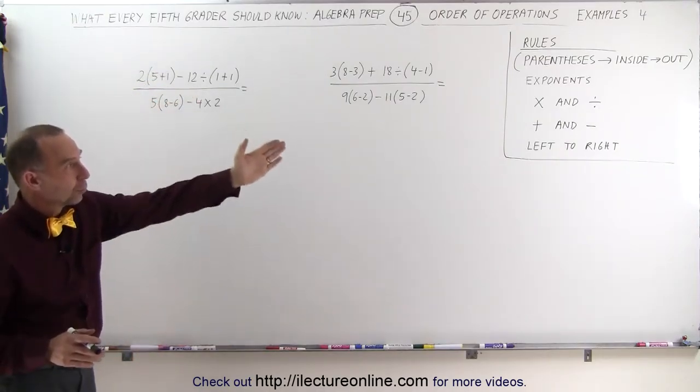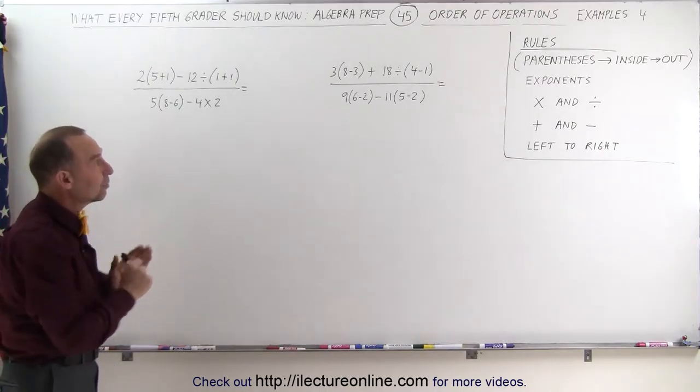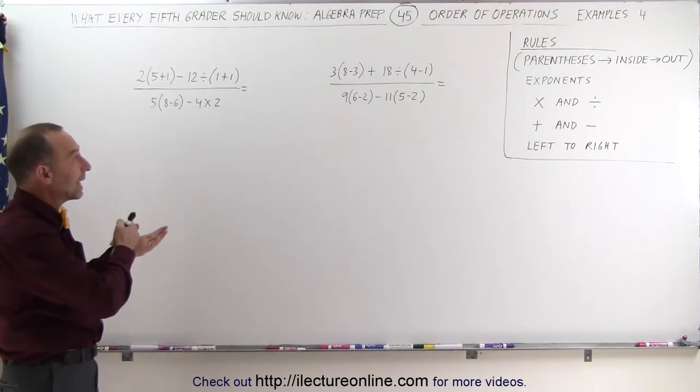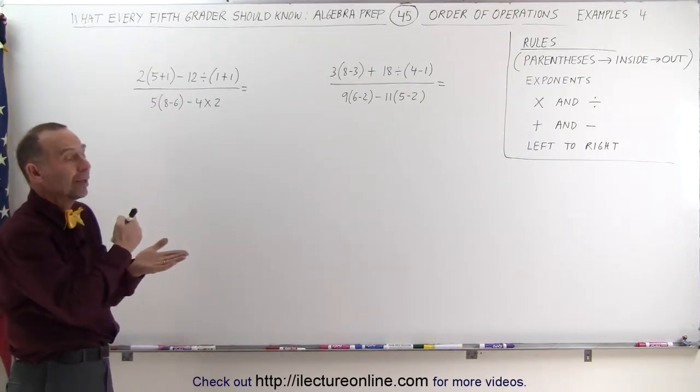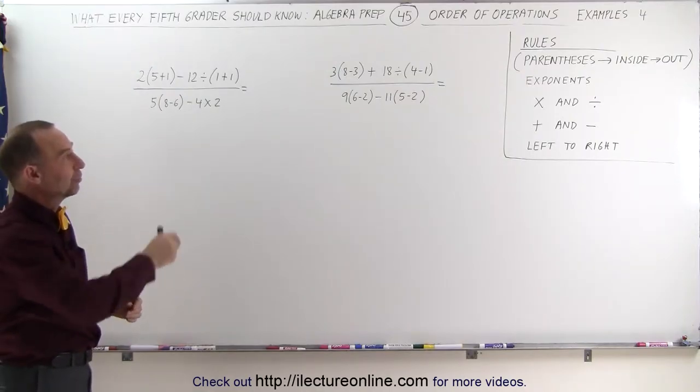Again, the rules are as follows: we do the parentheses from the inside out. We don't have any exponents yet. We do the multiplication and division before the addition and subtraction. And if there's any conflict or ties, we go from left to right.